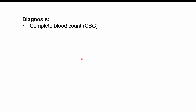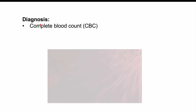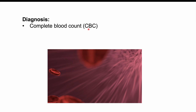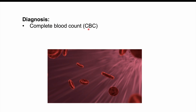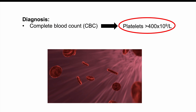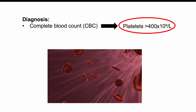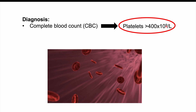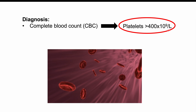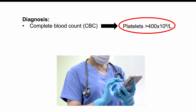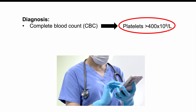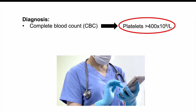How do clinicians diagnose thrombocytosis? The diagnosis is going to be by blood work — a complete blood count. We can look at red blood cells, white blood cells, and platelets, and we're going to see a platelet count above 400 times 10 to the ninth per liter. Some labs may have different numbers, but this is going to be a typical threshold.